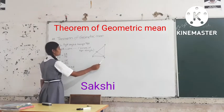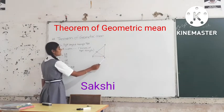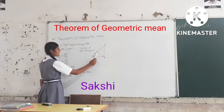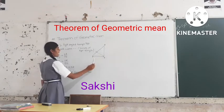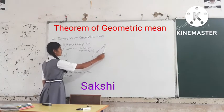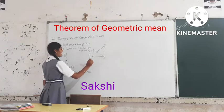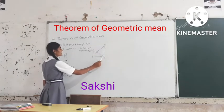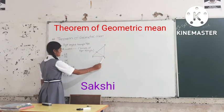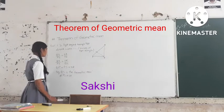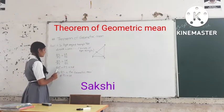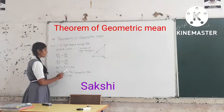In right angle triangle PQR, the perpendicular to the hypotenuse is PR. Given triangle PQR with angle PQR equal to 90 degrees. To prove: QS squared is equal to PS multiplied by SR.